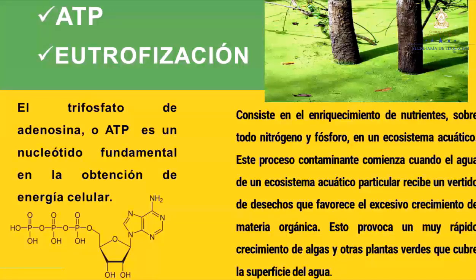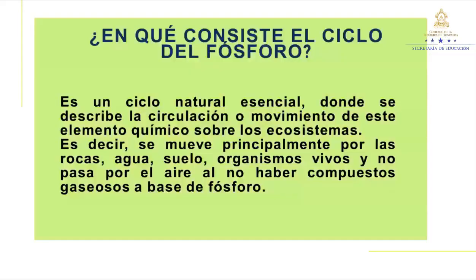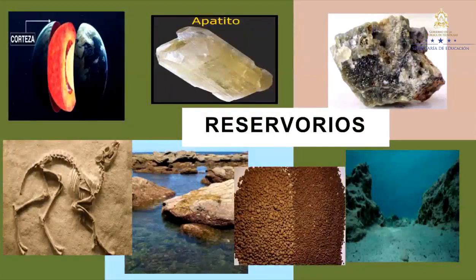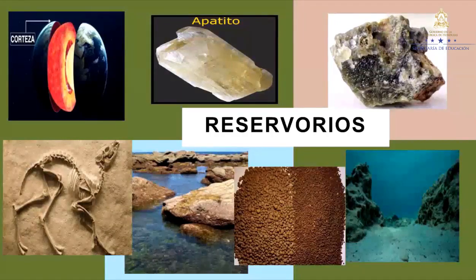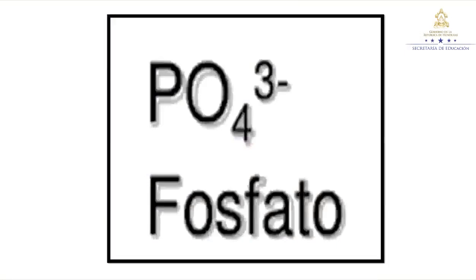Ahora veremos fundamentos esenciales para una mayor comprensión del ciclo del fósforo. ¿En qué consiste el ciclo del fósforo? Es un ciclo natural esencial donde se describe la circulación o movimiento de este elemento químico sobre los ecosistemas. Se mueve principalmente por las rocas, agua, suelo y organismos vivos, y no pasa por el aire al no haber compuestos gaseosos a base de fósforo. Su mayor reserva se encuentra en la corteza terrestre y en las rocas marinas, asimismo en la hidrosfera, en el guano, sedimentos oceánicos, restos de seres vivos y minerales de los fosfatos. En la naturaleza, el fósforo se encuentra sobre todo en forma de iones fosfato.